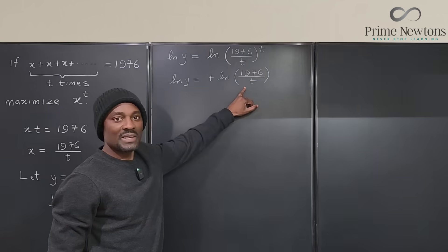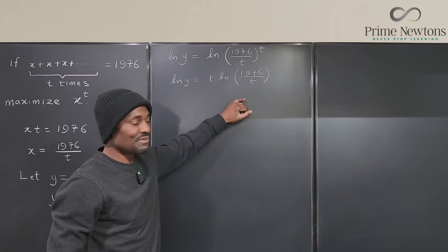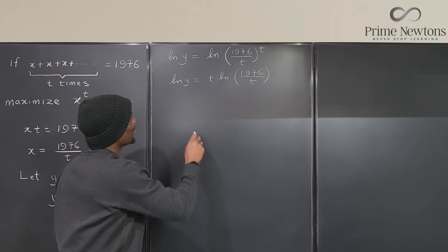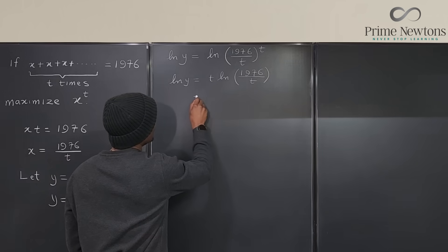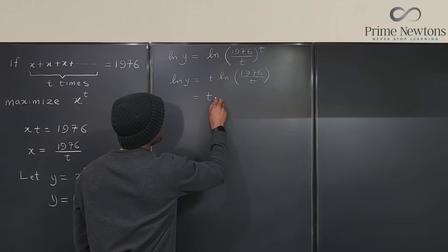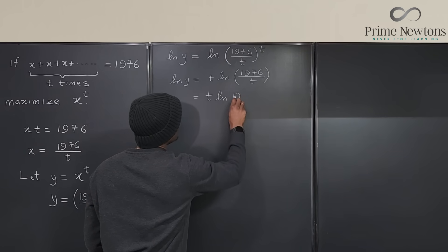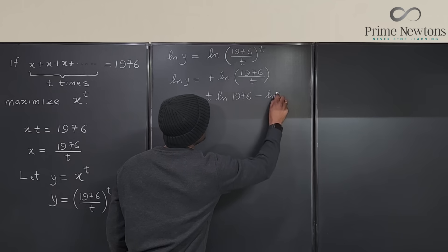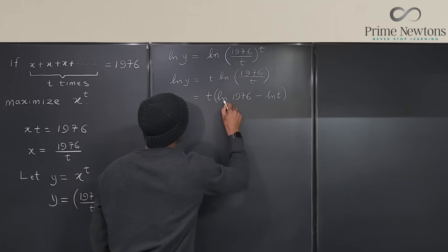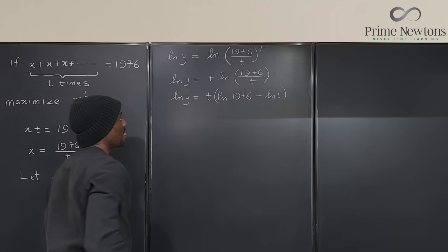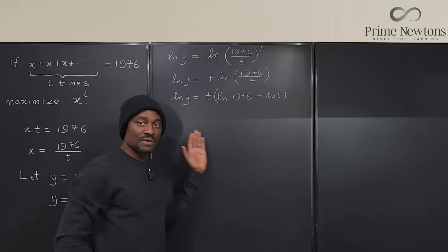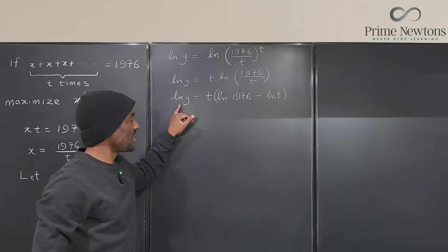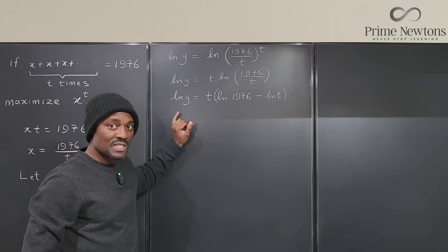We can actually rewrite this. Remember logarithmic differentiation, you make it easy. So we can rewrite this and say this is actually T times LN of 1976 minus LN of T. This is what we have and this is LN of Y.